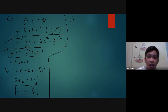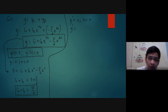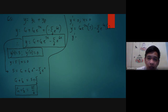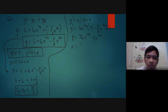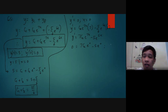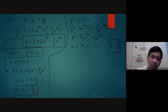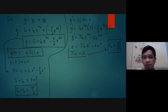Using the initial condition y prime of 0 equals 0, we find y prime equals 7c2e to the 7x minus 5e to the 6x. Substituting x equals 0: 0 equals 7c2 times e to the 0 minus 5 times e to the 0. So 7c2 equals 5, giving c2 equals 5 over 7.